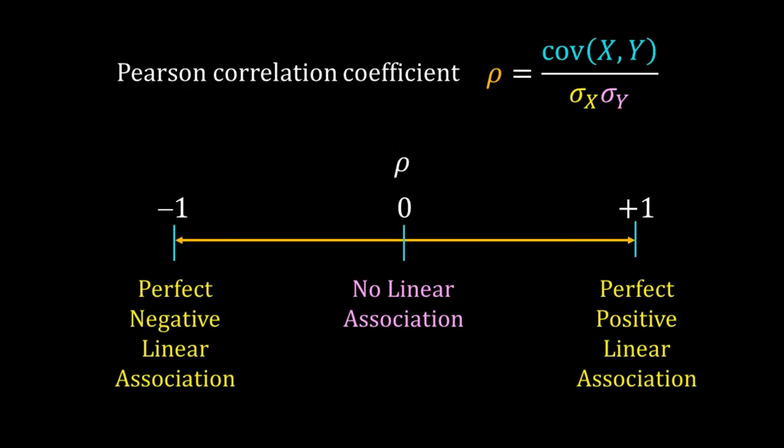To summarize: the Pearson correlation coefficient equals the covariance of two variables divided by their respective standard deviations. One crucial point is that it measures only linear association. It varies from −1 to +1: −1 means perfect negative linear association, +1 means perfect positive linear association, and 0 means no linear association. A value between 0 and 1 indicates weak or strong linear relation — the larger the magnitude, the stronger the association — and the sign represents the direction of the trend.